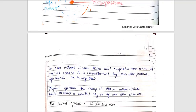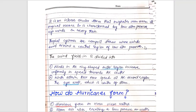This is the most important thing. It is an intense circular storm that originates in warm tropical oceans, generated by low atmospheric pressure and high winds.